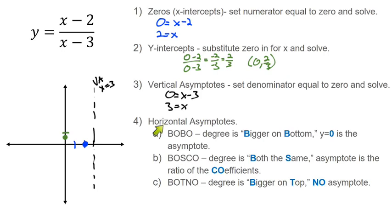And then lastly, let's get to this horizontal asymptote. So we have our BOBO, BOSCO, and BOTNO, and I believe I said on the previous slides, this is going to be a BOSCO situation. And what I mean by that is we have a first degree polynomial in the numerator and a first degree polynomial in the denominator. That means that both are the same. We don't have like a fourth degree and a third degree or a second degree and a fifth degree. We have a first and a first. They're the same.